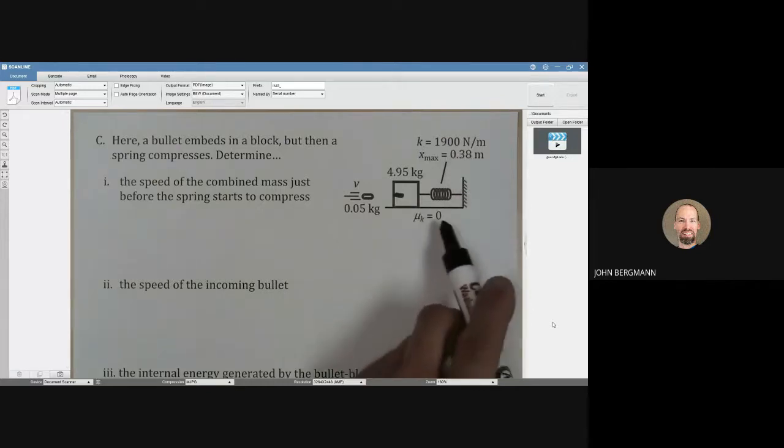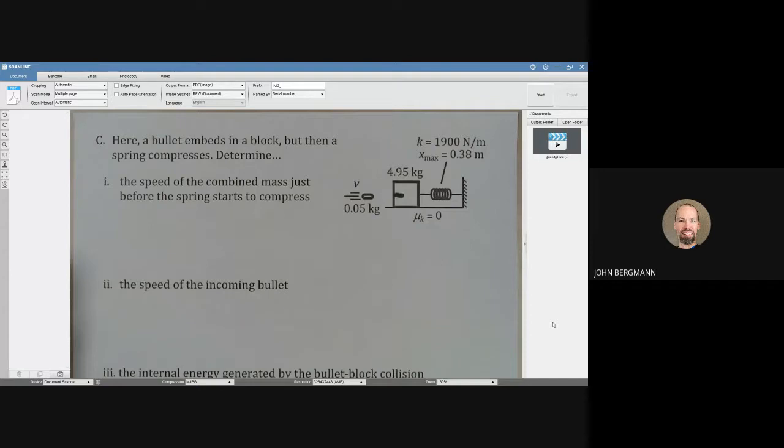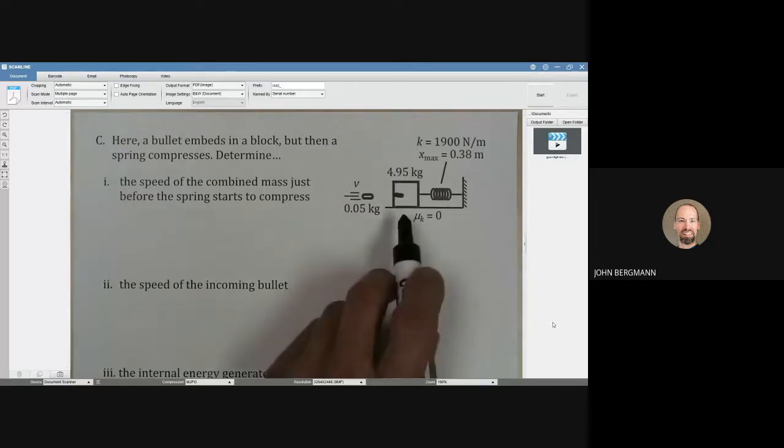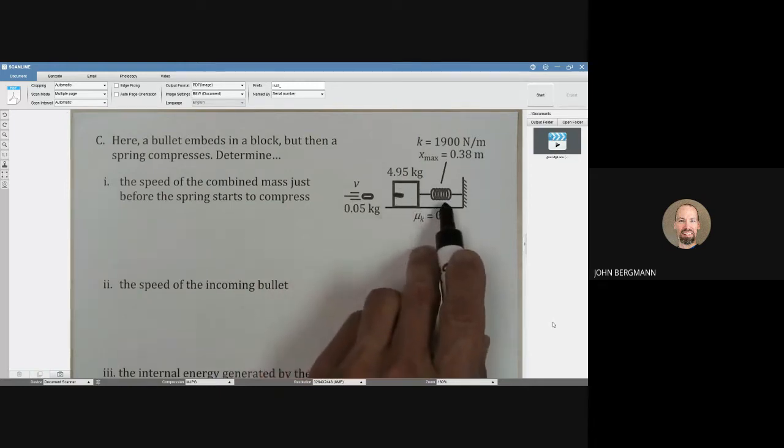This is a frictionless surface, so that's kind of nice, and these are the things we want to determine. We want to determine the speed of the combined mass just before the spring starts to compress. That speed entails kinetic energy.